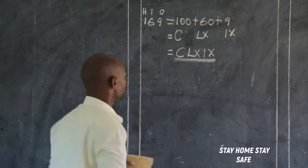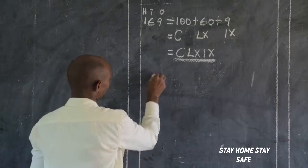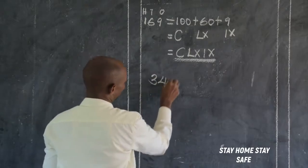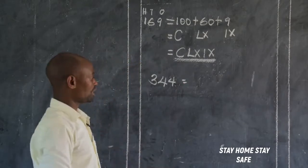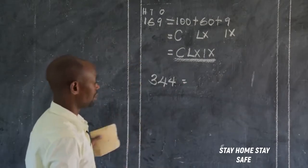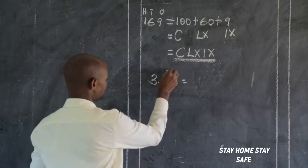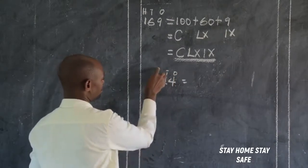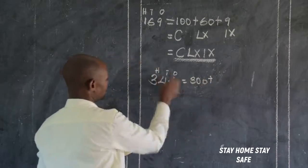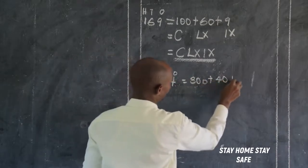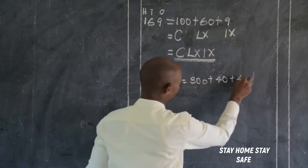What about if we have been given three hundred forty-four? We do the same — expand. Ones, tens, hundreds: three times a hundred is three hundred, four times ten is forty, four times one is four.